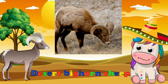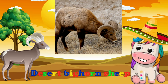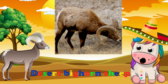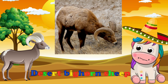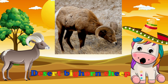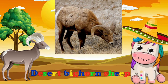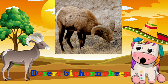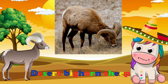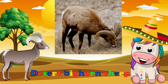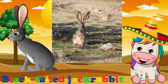The desert bighorn sheep is a subspecies of bighorn sheep that is native to the deserts of the United States Intermountain West and southwestern regions, as well as northwestern Mexico. The Bureau of Land Management considered the subspecies sensitive to extinction.